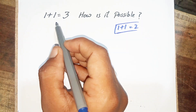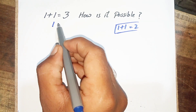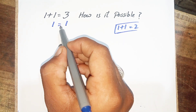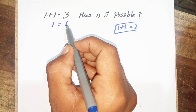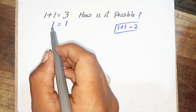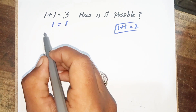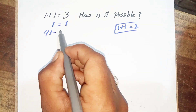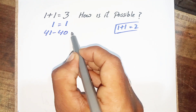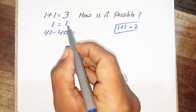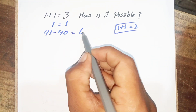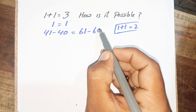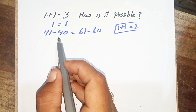First of all, I have to prove my question. I can say that 1 plus 1 equals 1. Now this first '1' will be written as 41 minus 40, and this second '1' will be written as 61 minus 60. Is it clear?